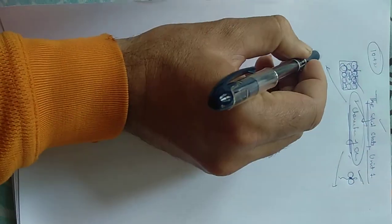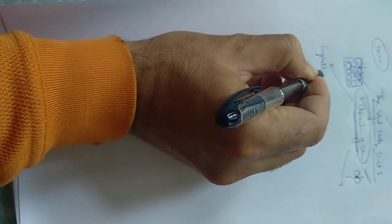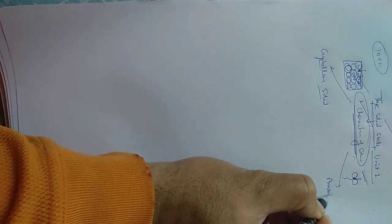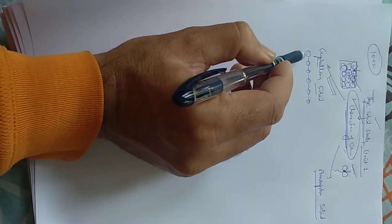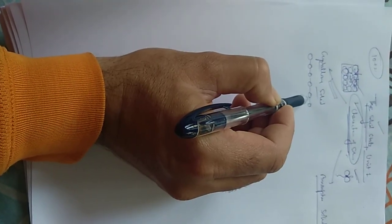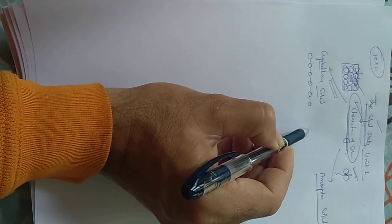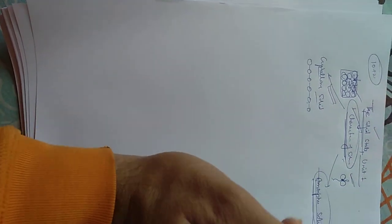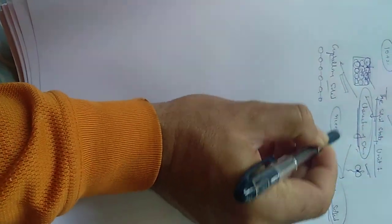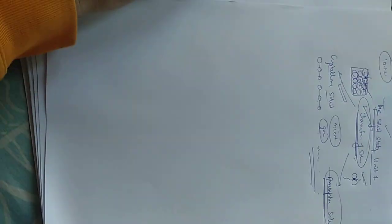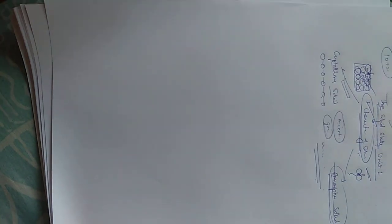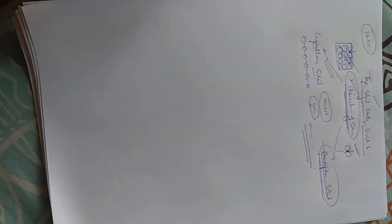Solids are divided into two categories: crystalline solids and amorphous solids. In crystalline solids, particles have a regular arrangement over long distances. In amorphous solids, there is no regular arrangement. For diagrams, you can download NCERT books online — search on Google for NCERT online books and download freely from the NCERT webpage.